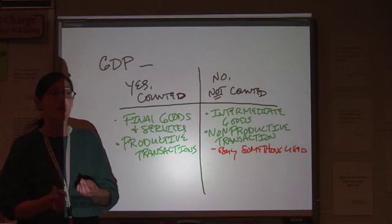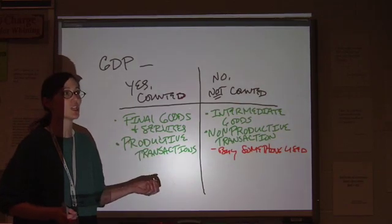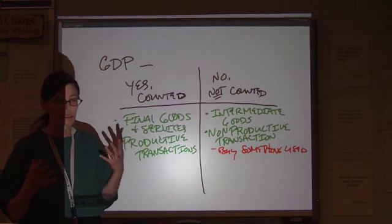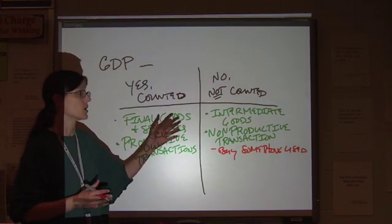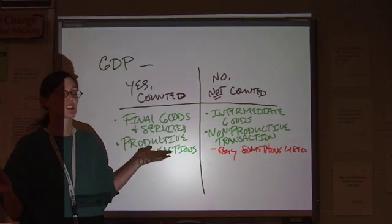Because if you count sales of things that are used, then you are double counting them, which inflates your GDP and does not give you an accurate picture of what your national production is. So if you buy something used, that's not included.